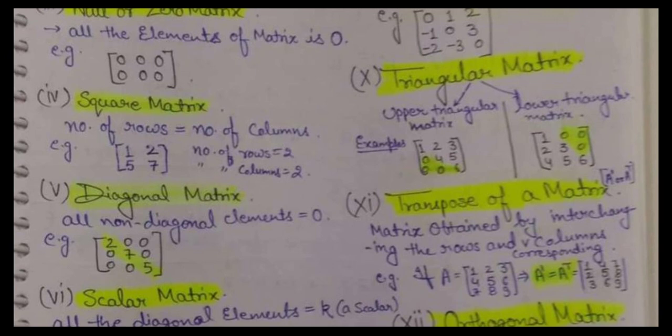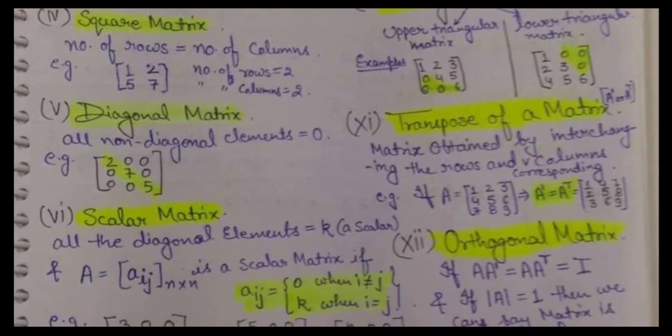Next is square matrix, in which the number of rows and number of columns will be equal — that means 2 rows and 2 columns, or 3 rows and 3 columns. When the number of rows and columns are equal in a given matrix, you can say that is a square matrix. Next is diagonal matrix — a matrix in which the non-diagonal elements will be 0. All the non-diagonal elements not present in the principal diagonal will be zero. The principal diagonal starts from the first element of the given matrix, for example 2, 7, and 5.